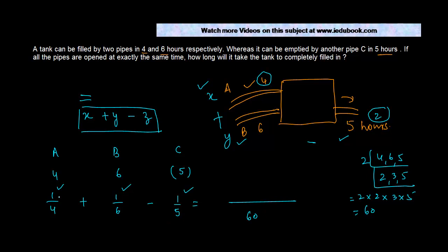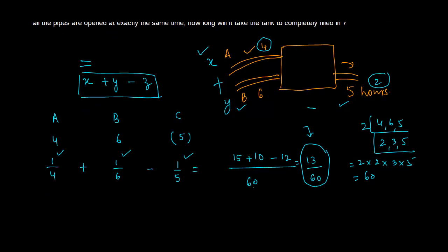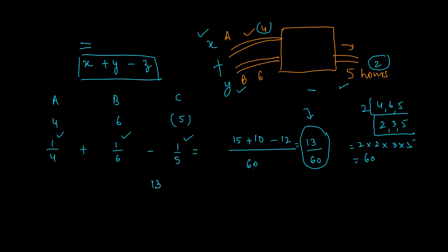Sixty divided by four is fifteen into one, fifteen. Sixty divided by six is ten into one, ten. Minus sixty... So basically in one hour the tank gets filled to the extent of thirteen by sixty. So thirteen by sixty of the tank is filled in one hour.